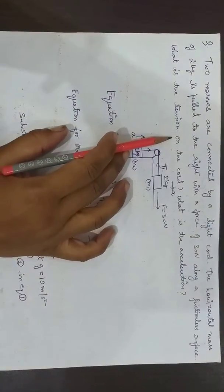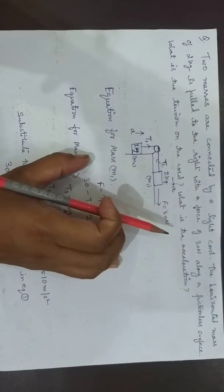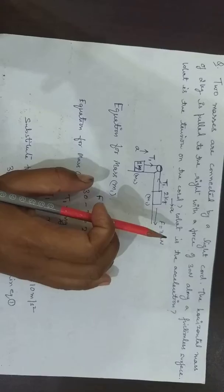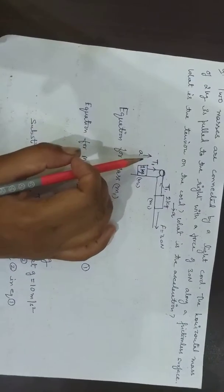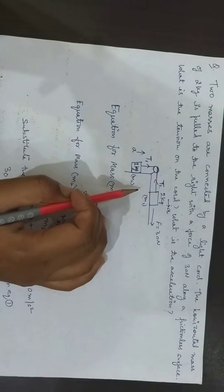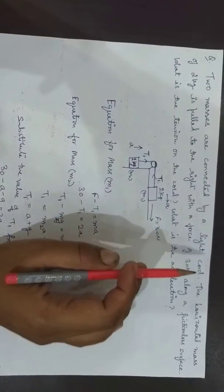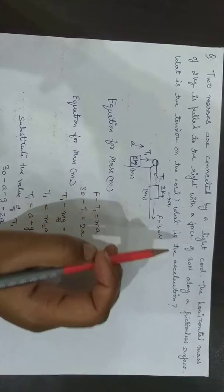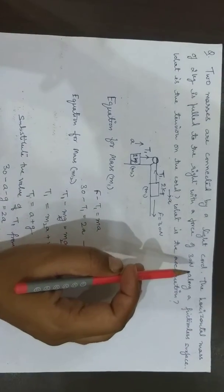What is the tension on the cord and what is the acceleration? You have to calculate two parameters here: the acceleration and the tension. You are provided with the masses which are placed on this frictionless surface, and the 2 kg mass is pulled with a force of 30 N towards the right.